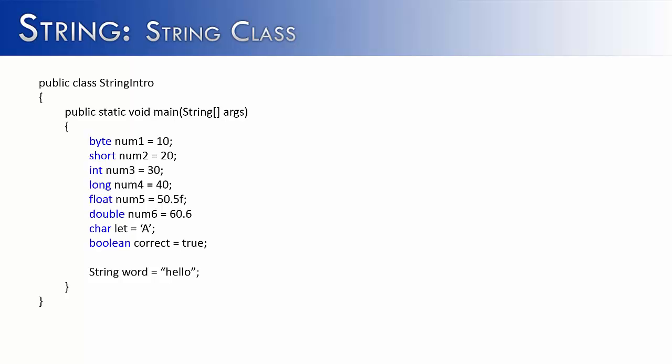Let's talk about and introduce the string class. You can see that I've listed a bunch of data types here, starting with byte and ending with boolean. Any one that's in blue on the screen is called a primitive data type, and it is different from string.